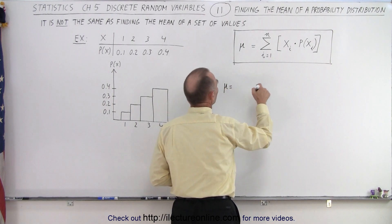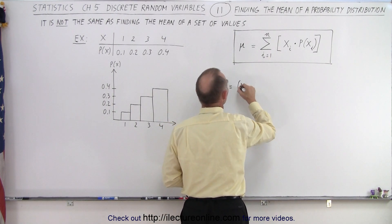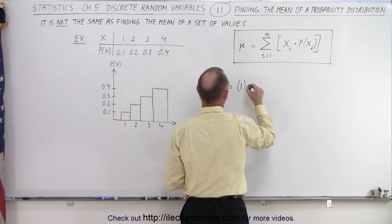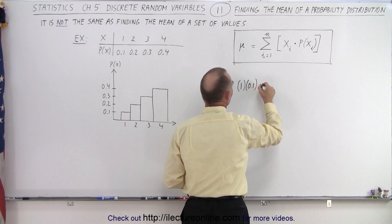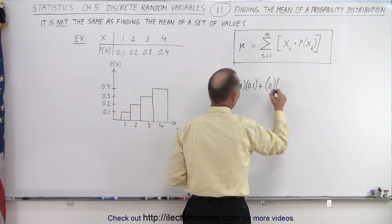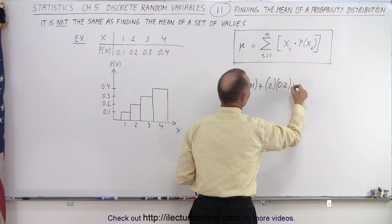So mu is equal to, well x can be equal to 1, and the probability of x being equal to 1 is 0.1. We add that to x being equal to 2 and the probability that x can be 2 is 0.2 plus the probability that,